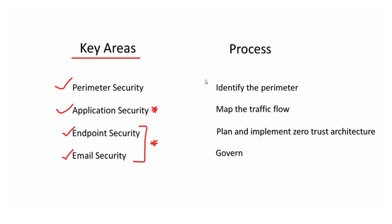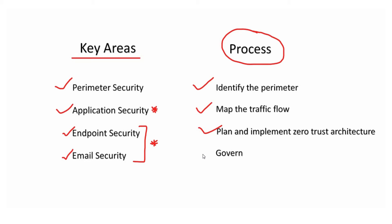So where exactly do we start? Here's a simple process: as an architect, you start off by identifying the perimeter of your infrastructure, followed by mapping key resources and the traffic flow — be it inbound or outbound. Once that is noted, it's time to put an implementation plan together to execute those configuration steps to achieve a zero trust state of your infrastructure.